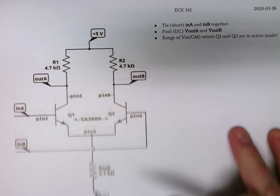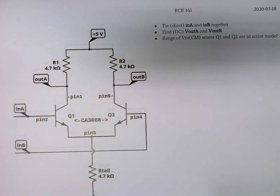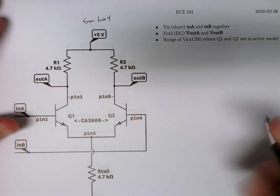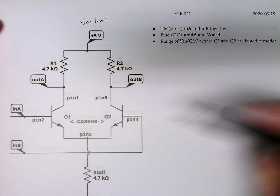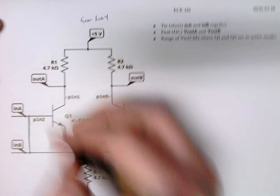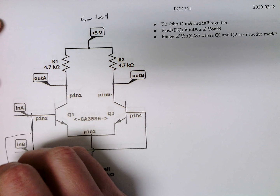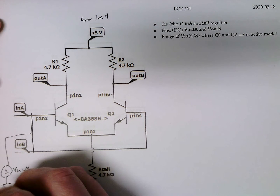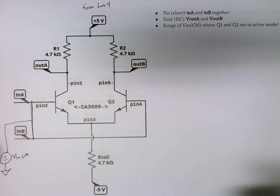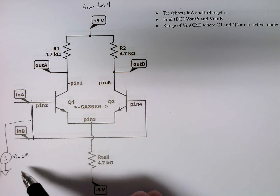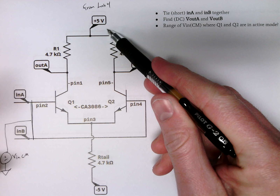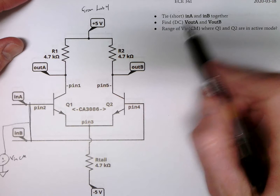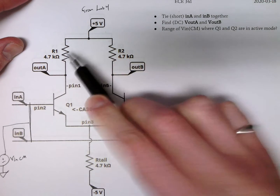Moving to the next page — this is from lab four. We're going to tie or short A and B together, draw a wire there, and attach a voltage source called VNCM. There's our zero reference. There are no nodes in here at zero volts, but that's okay — the plus five is with respect to the zero down there. We've done this a few times already. Find the DC value of Vout and VB.